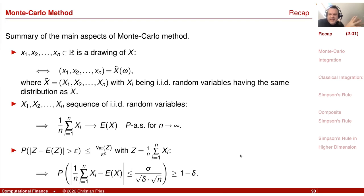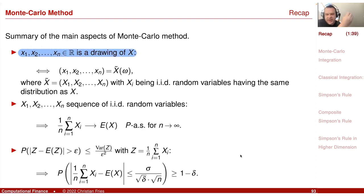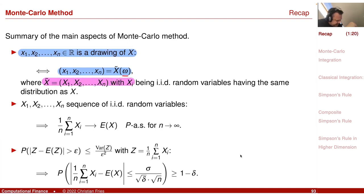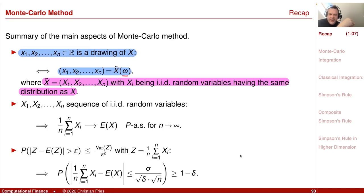Let's recall the main aspects of our session on the Monte Carlo method. The first one is that we recalled what a drawing of a random variable X is. A drawing of a random variable X is a sequence — if it is a real-valued random variable, it's a sequence in R. This drawing can be modeled by a single event omega of a sequence of IID random variables X tilde, having the same distribution as X.